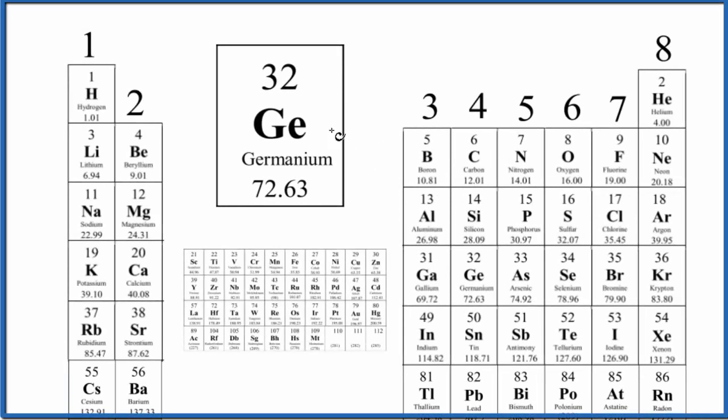Let's take a look at the number of valence electrons for germanium, that's Ge, on the periodic table.